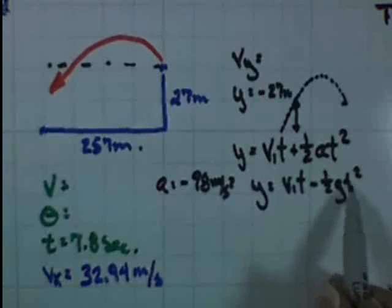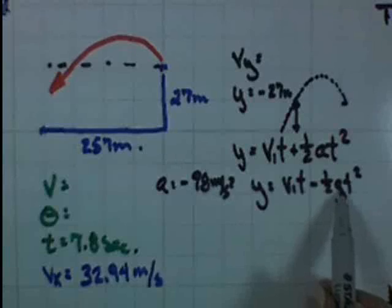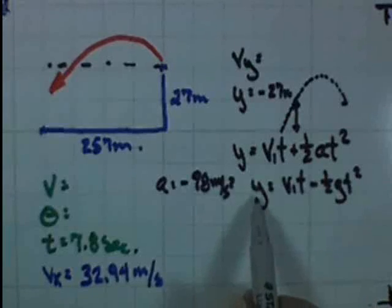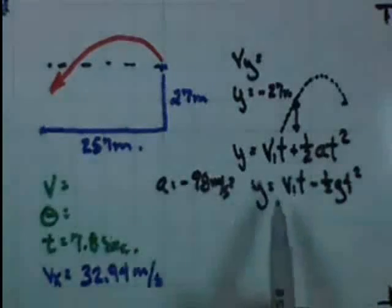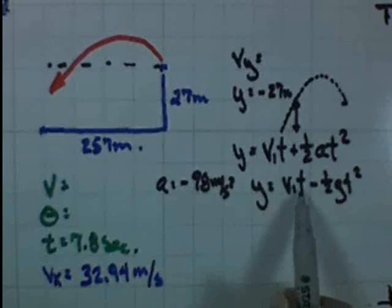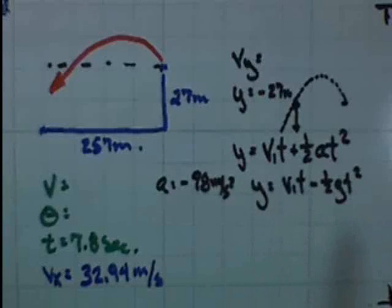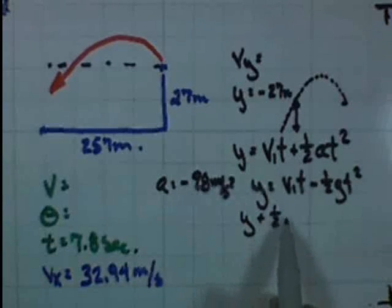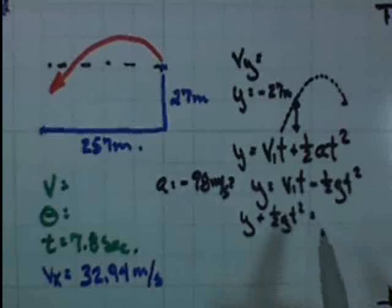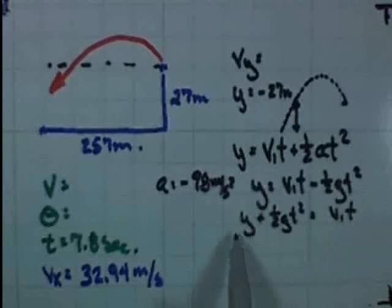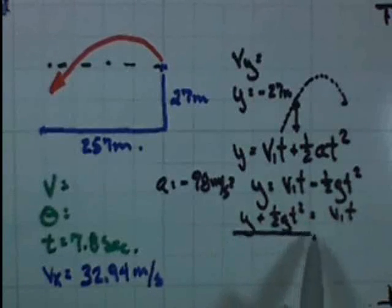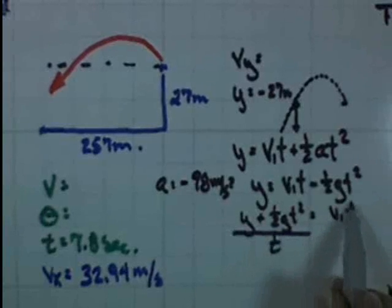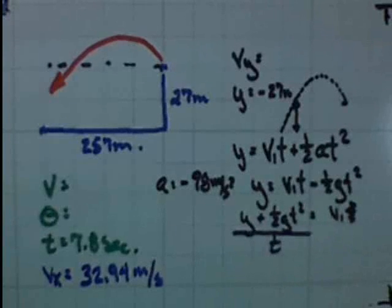I know the time in the air, I know my acceleration due to gravity, and I know the distance — negative 27 meters — I'm going to travel in that period of time. So now I can do algebra to find that initial velocity. Rearranging: y plus one-half·g·t² equals v_i·t, so dividing both sides by t gives my initial velocity. Let's try that out and see what we get.